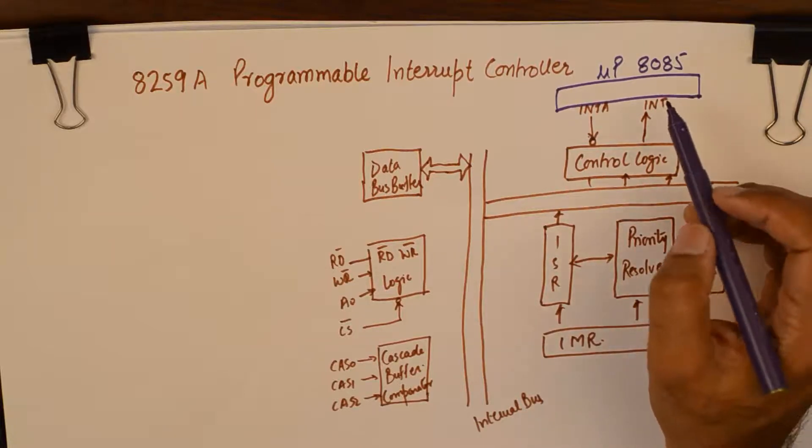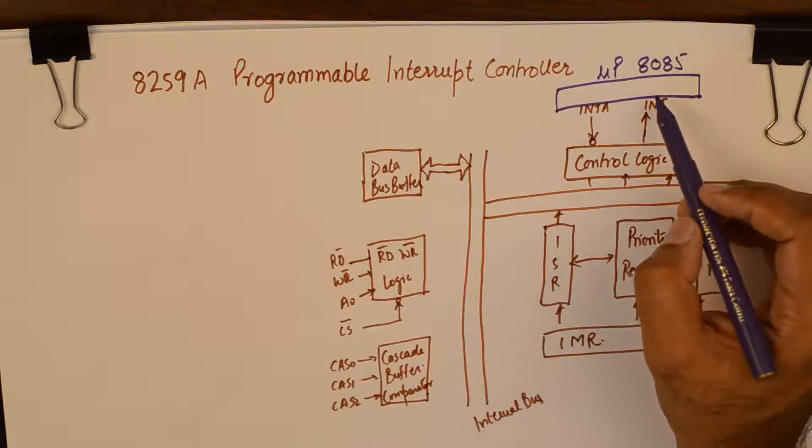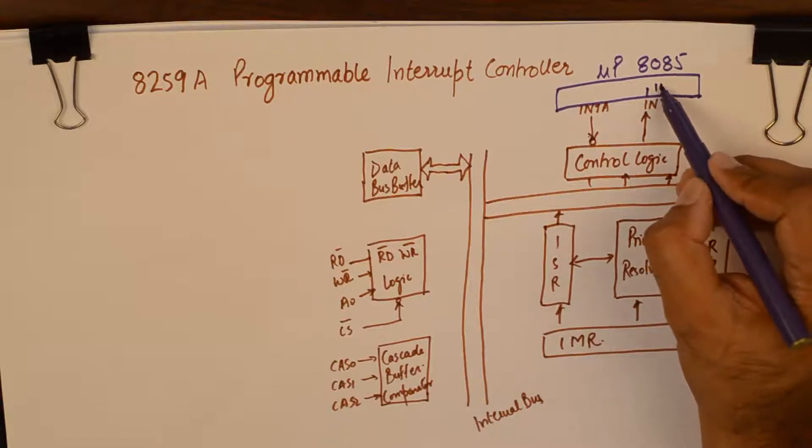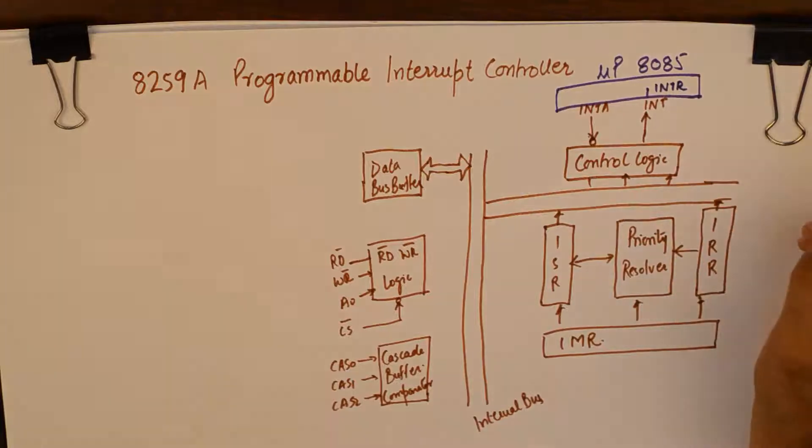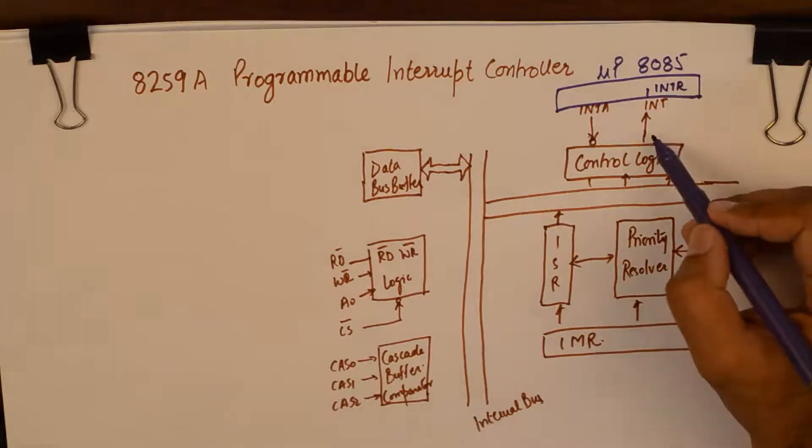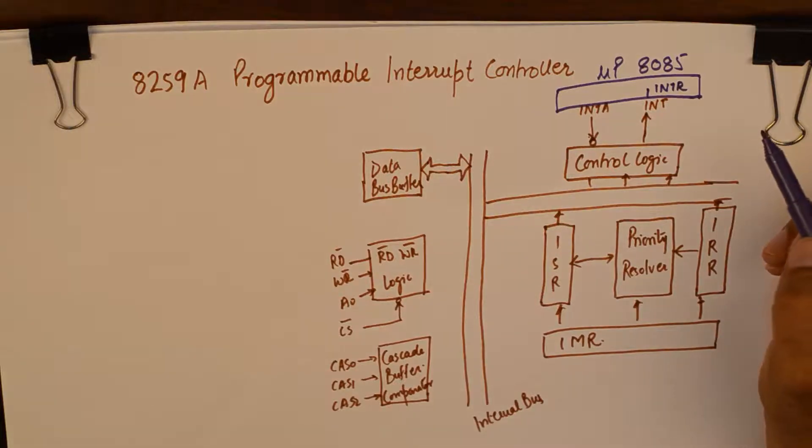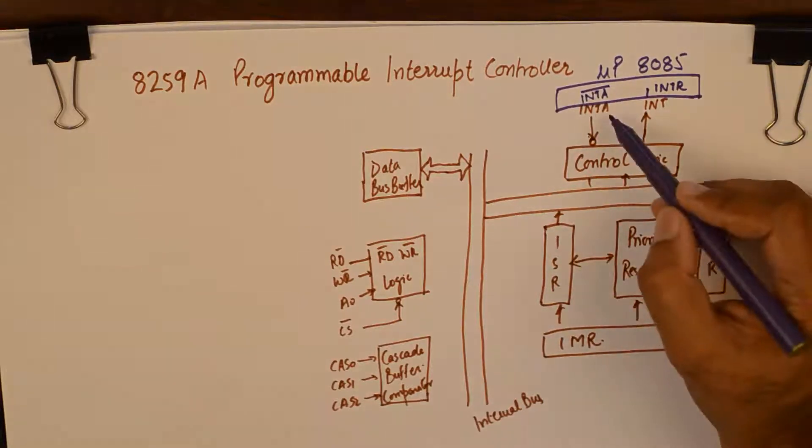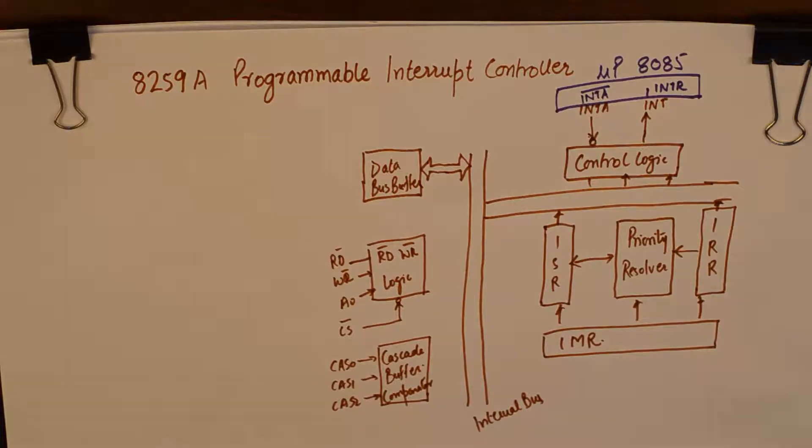So what we are going to do is we are going to place our microprocessor 8085 and the first connection that we would want to make would be the interrupt INTR pin of 8085. The point of contact of 8085 connecting to the INT pin of 8259 and interrupt acknowledge of 8085 connected to the interrupt acknowledge pin of 8259. So the point of contact of 8085 with 8259 are two pins INTA and INTR.